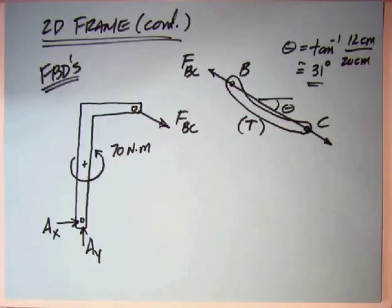I've separated this particular frame into two pieces. The left piece, which is sort of an L, and then the two-force member. It's a two-force member because it's loaded only at its ends, B and C. There's a pin at B and a pin at C.